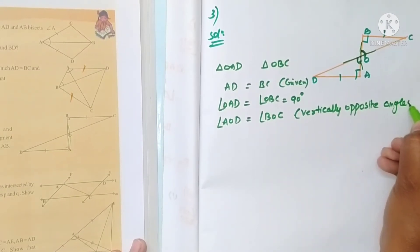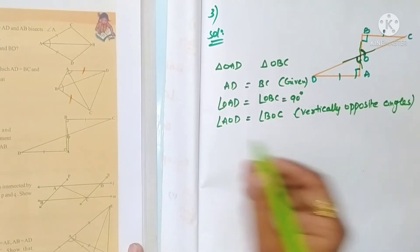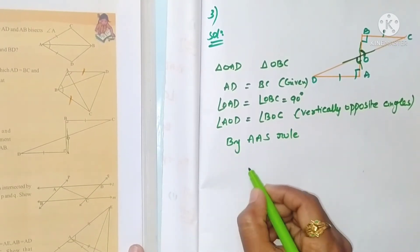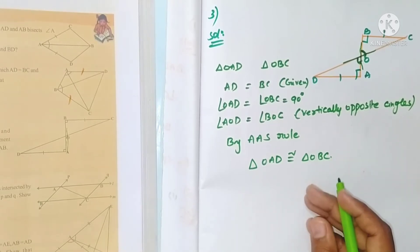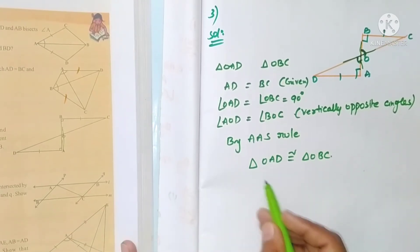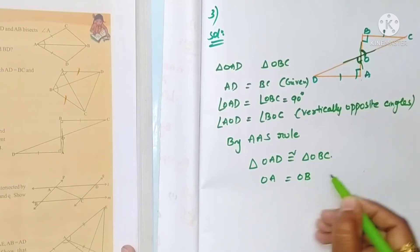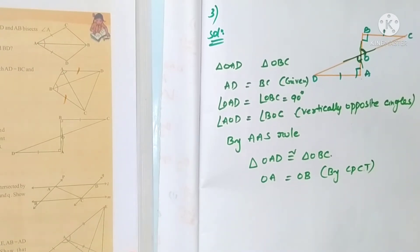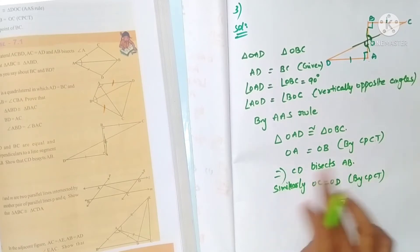So we have two angles and one non-included side equal. By the Angle-Angle-Side rule, these two triangles are congruent. You may have a doubt: they asked to prove CD bisects AB, but we showed the triangles are congruent. By CPCT, OA is equal to OB — OA equals OB means CD bisects AB.